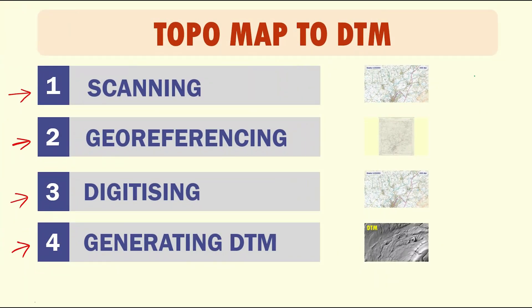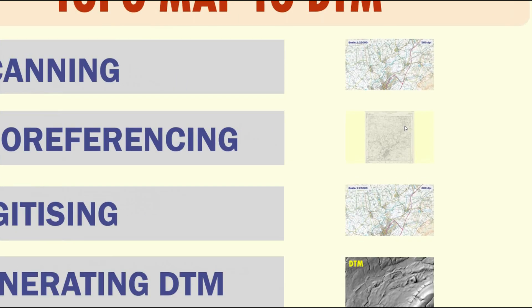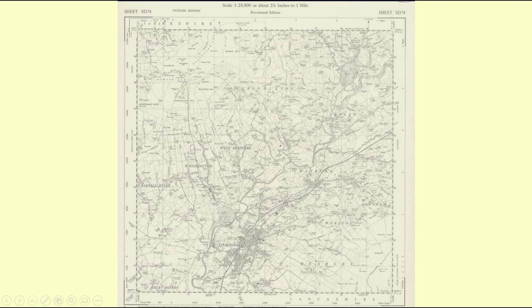After you scan your paper map, you need to move to the next step, which is georeferencing your data. In this step you are going to define the coordinate system for your data and also project the data. After scanning, your map would be an image, as you can see in this example.